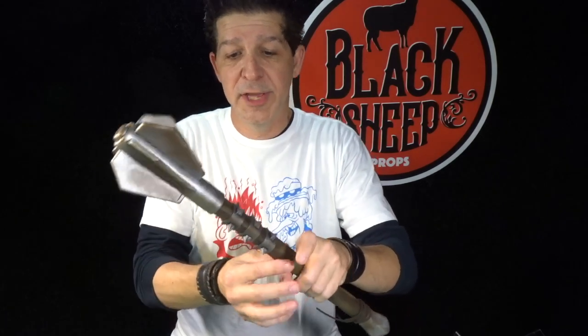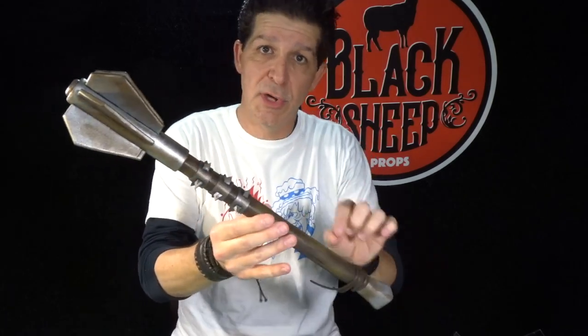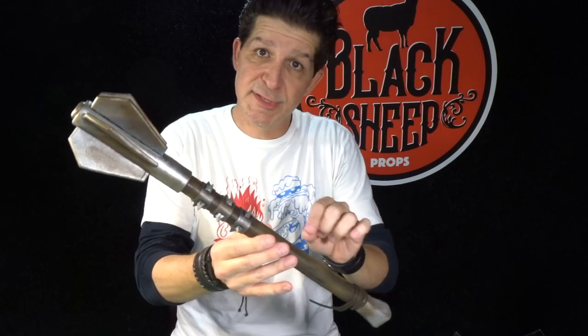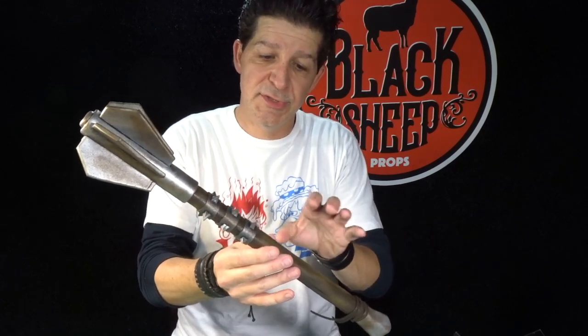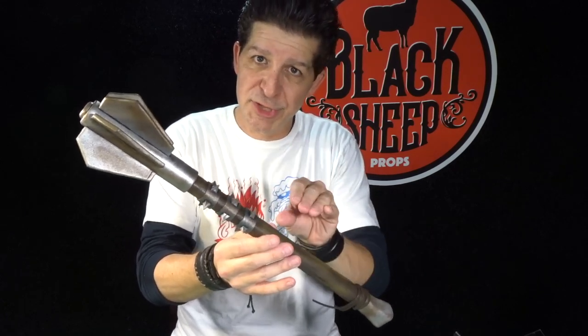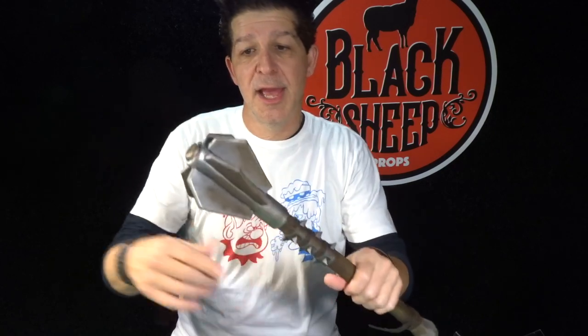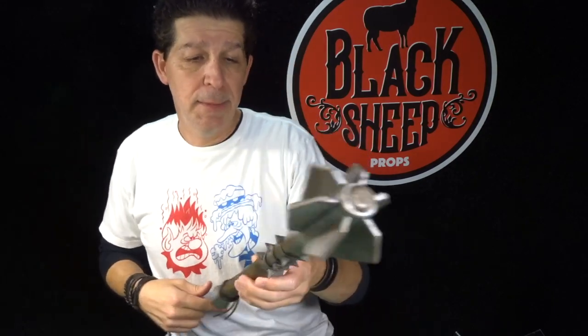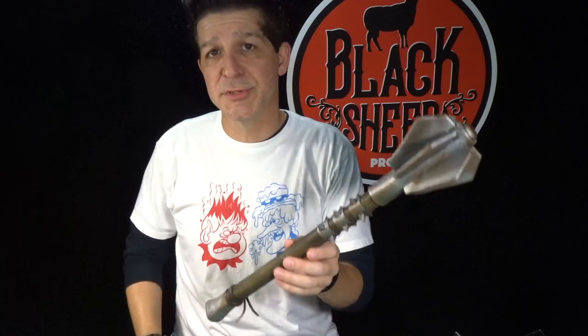Now in our last episode, making an EVA foam medieval mace part one, we constructed the whole handle. You saw us embed support inside of it so it's rigid, sandwich it, shape it, and wrap the head in steel with steel fins for the top. Everything went down perfectly, piece of cake.